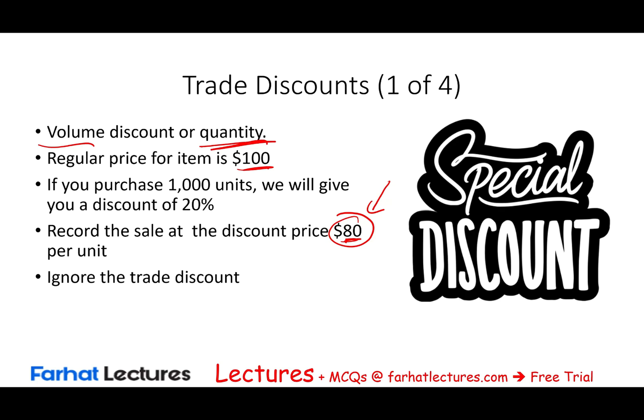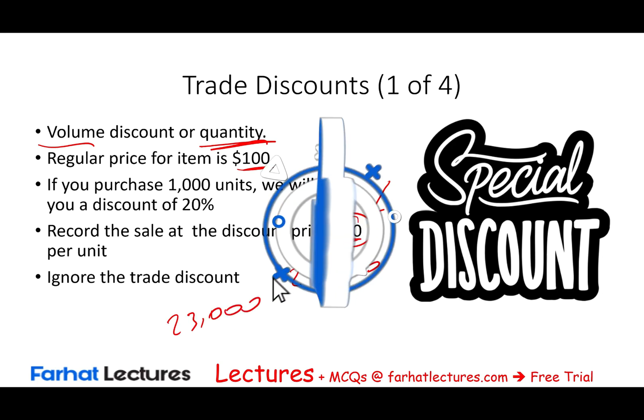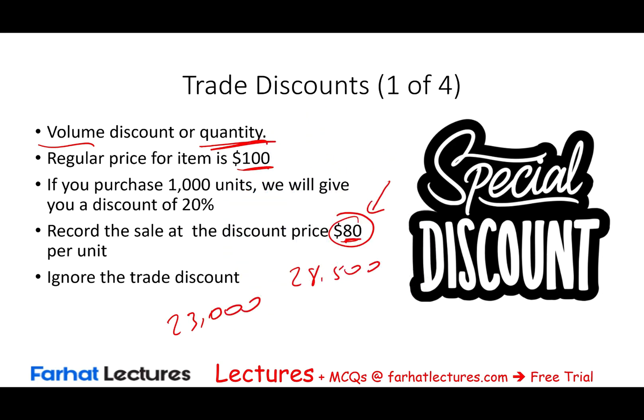Think about buying a car. The list price might be $28,500, but you end up paying $23,000. How much did the car cost you? $23,000. How much would the seller say they sold it for? $23,000. It doesn't matter what the catalog price is — it's the price at which the transaction actually took place. That's what we care about.